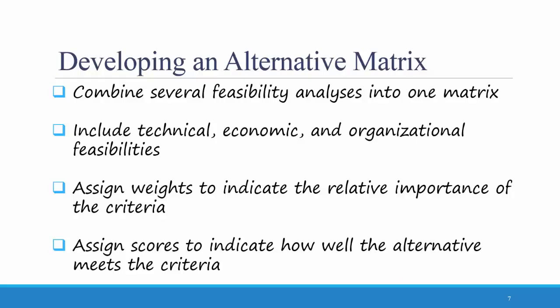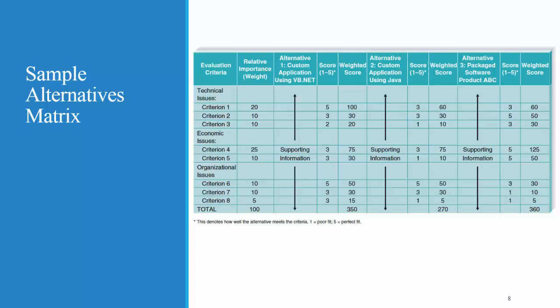You won't have to create an alternative matrix for your project in this class, but I would like you to look at this example alternative matrix to understand how it works. Across the top there are several different alternative options. The first two are developing the system in-house using either VB.NET or Java, and the third alternative is to purchase packaged software product ABC. In the first column you organize your feasibility issues — technical, economic, and organizational — and assign weighted scores for each alternative. After weighing the options, it looks like this organization should probably choose alternative three and purchase the prepackaged software, because that is the alternative with the highest score.